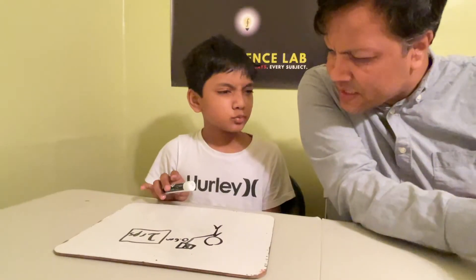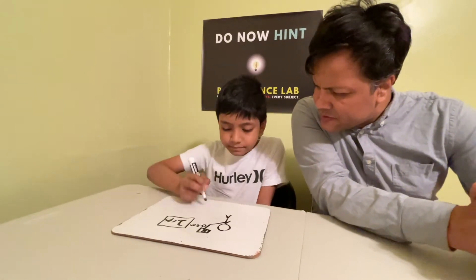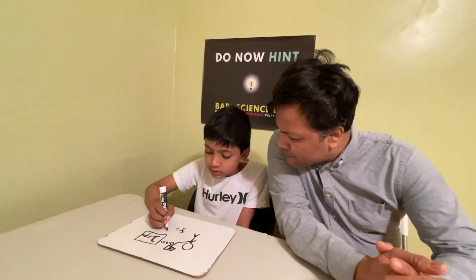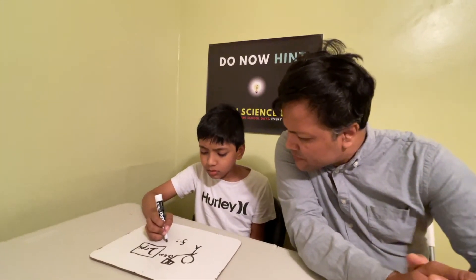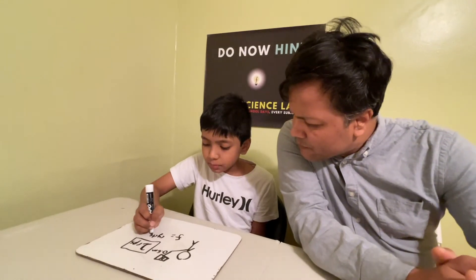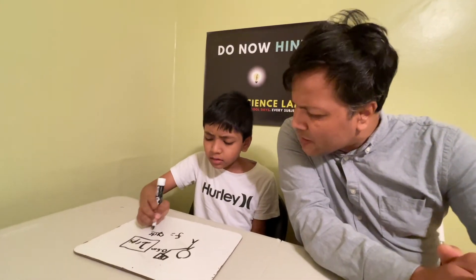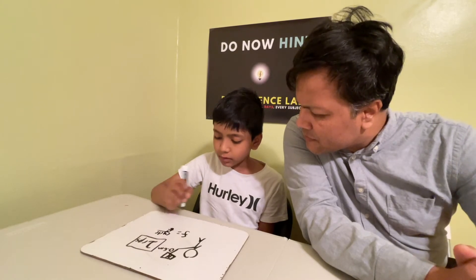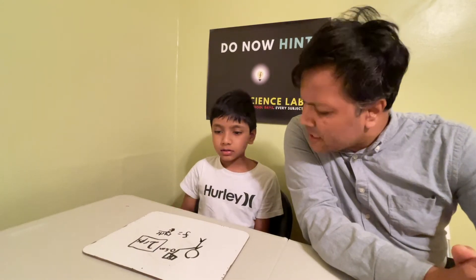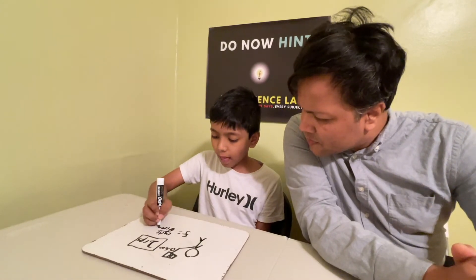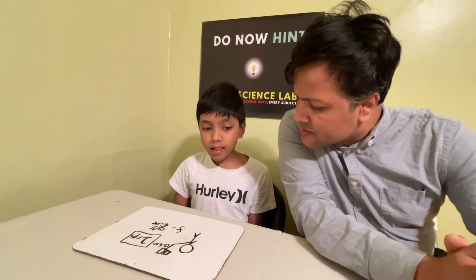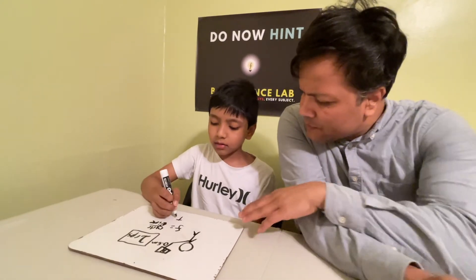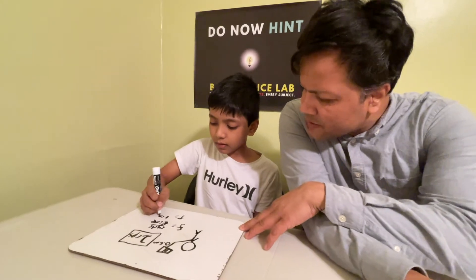Frequency is cycle over time. So write: frequency equals cycle per second, cycle over time — T for time. Now, the period is time over cycle.